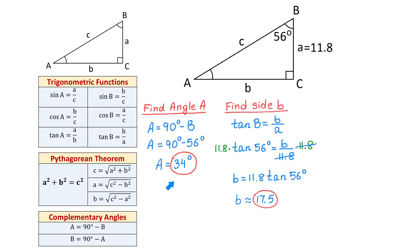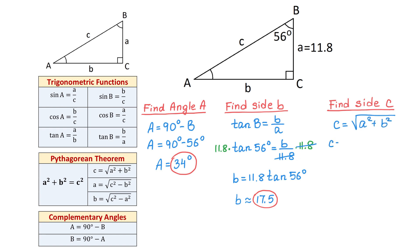So far we have found angle A and side B, and now we need to find side C. Once we have angle A and side B, we can use any trigonometric function containing side C, or we can use the Pythagorean theorem. I will use the Pythagorean theorem: C equals the square root of A squared plus B squared. Replacing A and B, we get the square root of 11.8 squared plus 17.5 squared, which gives C approximately 21.1 units.